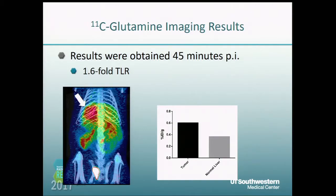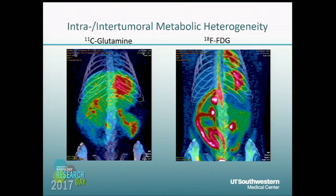For one of the new radiotracers — carbon-11 glutamine — it had a modest tumor-to-liver ratio of 1.6. Based on the maximum intensity projection image, you could delineate where the tumor was compared to the background. Most interestingly, when imaged in the same rat the next day, you could see where FDG had high uptake but glutamine had low uptake. This might support doing a glutamine scan immediately followed by an FDG scan to give a higher rate of tumor detection.